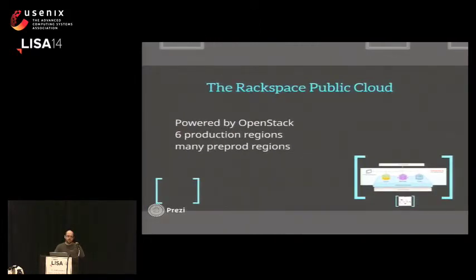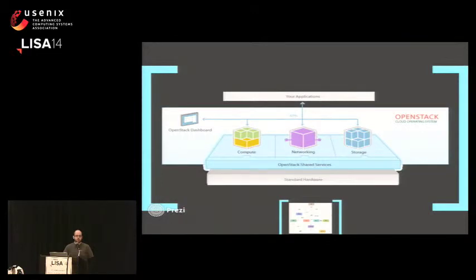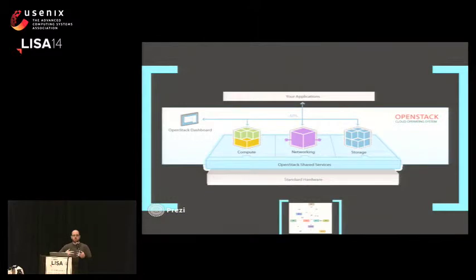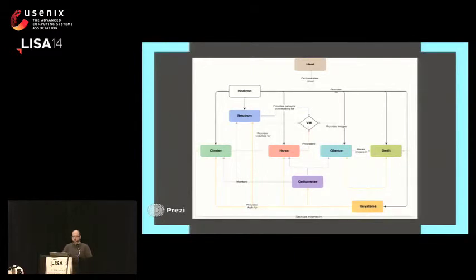Let's talk about the Rackspace public cloud. It is powered by OpenStack — the open source Python cloud platform software that is totally awesome. The Rackspace public cloud has six production regions and many small pre-production regions. For those unfamiliar with what OpenStack looks like, in its simplest form it's a collection of software that provides compute, networking, and storage resources behind an API service. It utilizes standard hardware and provides an API to your end users so you can create computers with networking and storage as you wish.